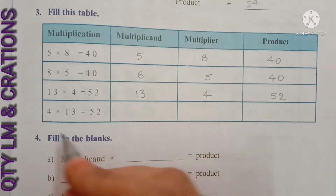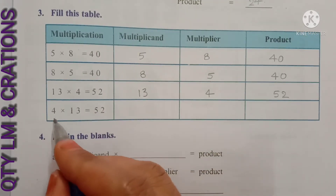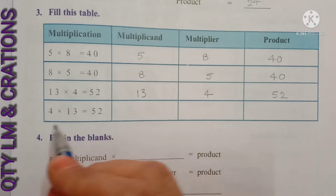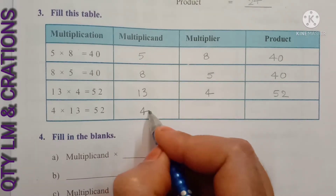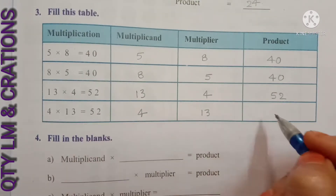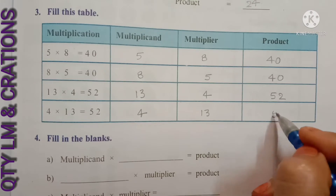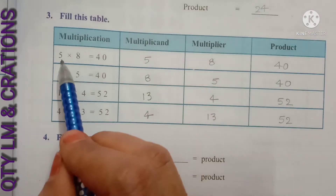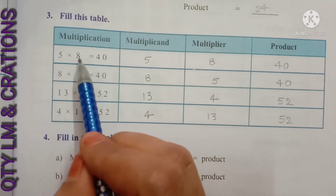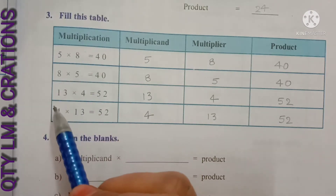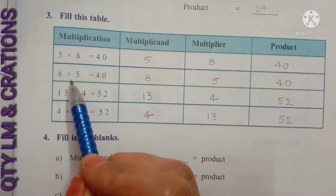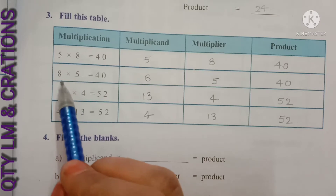Next: 4 into 13 equals 52 — here multiplicand is 4, multiplier is 13, product is 52. When we multiply two numbers, the order in which we multiply them does not matter; the product remains the same.